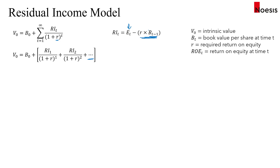If we express this in terms of ROE, knowing that ROE at time t equals earnings over the beginning book value of equity, we can express earnings per share at time t as ROE times beginning book value. So another way of expressing residual income is to take the difference between ROE and the cost of equity, then multiply by the beginning book value of equity.